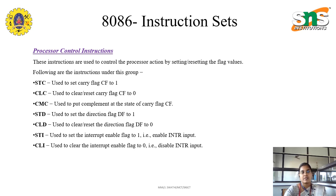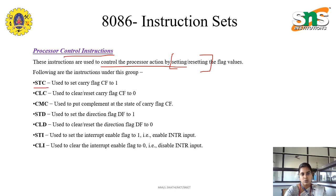Here we have the processor control instructions. These instructions are used to control the processor action by setting or resetting — either it should set or it should clear. So we have either set, that is ST, or clear, that is CL. Under this, we have certain instructions like STC. ST stands for set and CL stands for clear.